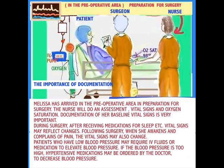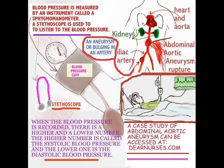I just wanted to briefly talk about blood pressure. Blood pressure is measured by an instrument called the sphygmomanometer. We use the stethoscope as well to hear the blood pressure. There is a high number, which is the systolic pressure, and a low one, which is the diastolic pressure. There is more information at dianessis.org on that topic.